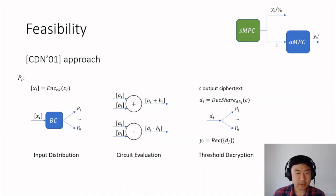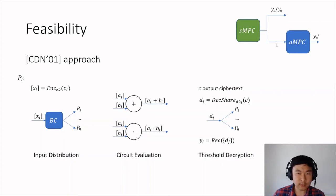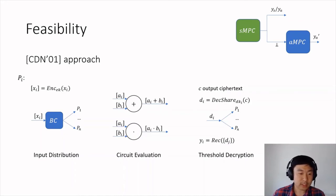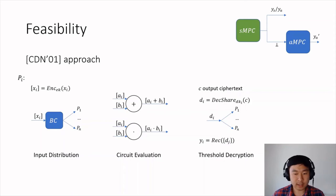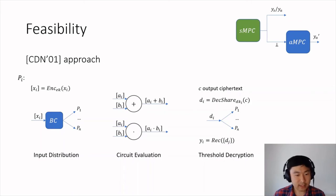The CDN protocol was designed under a synchronous network, and intuitively it works because honest parties have agreement on the ciphertext to decrypt after the circuit evaluation, and no crucial information is revealed throughout the protocol execution. When the network is asynchronous, however, several problems might arise because agreement is lost at critical points. For example, when parties broadcast their input ciphertext, different parties may receive different sets of inputs. If they evaluate this, different parties will end up with different ciphertexts which, if decrypted, will lead to the adversary learning different outputs and breaking privacy.